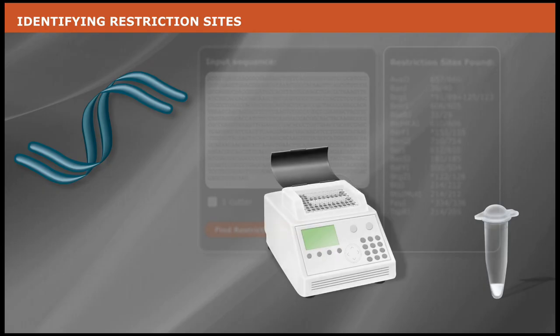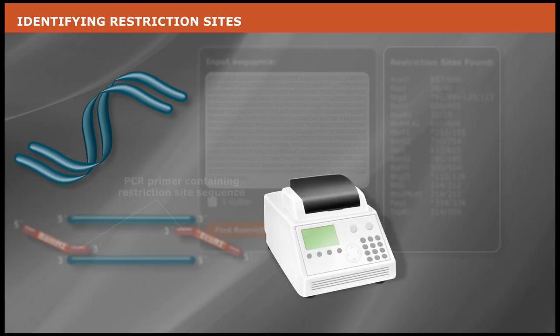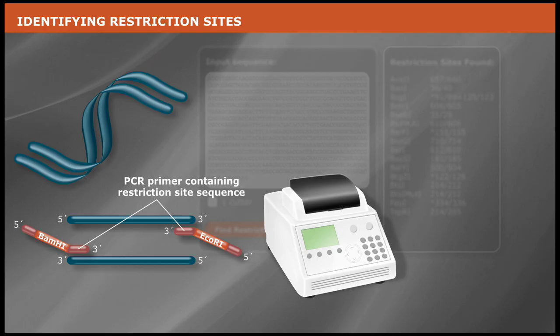In many cases, PCR can be used to add the necessary restriction sites to the gene of interest to facilitate directional cloning.